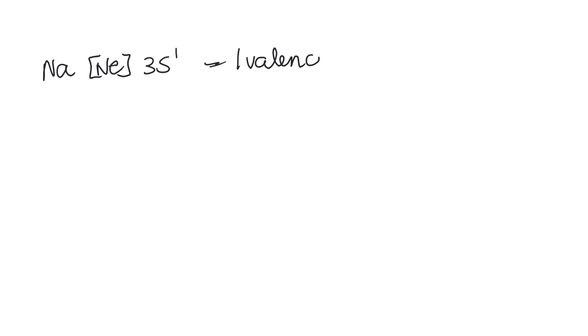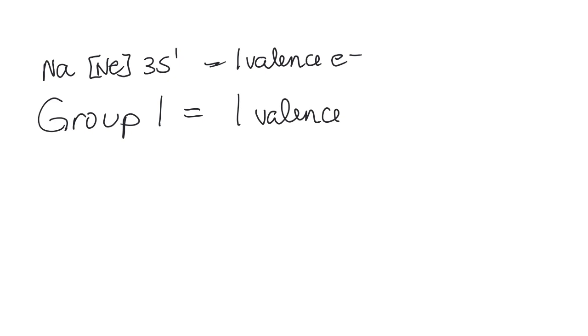Let's talk about valence electrons based on groups. Going back to sodium — sodium was Ne and 3S1. Its highest energy level was the third energy level, and it had one electron in that, so it had one valence electron. That's the same with all the elements in group 1. That whole column is S1, so all group 1 elements have one valence electron.